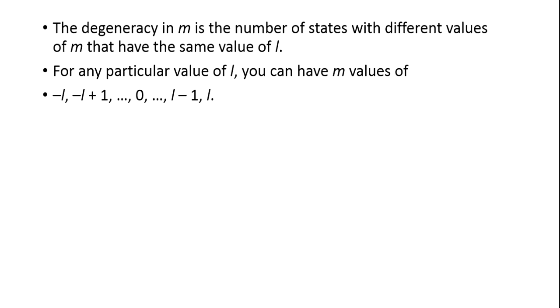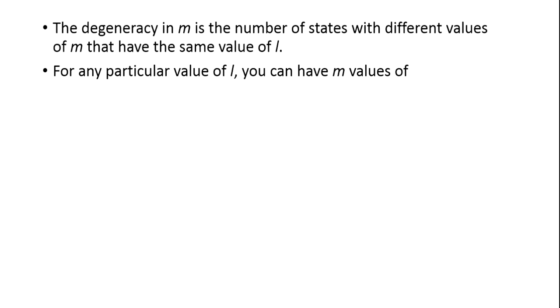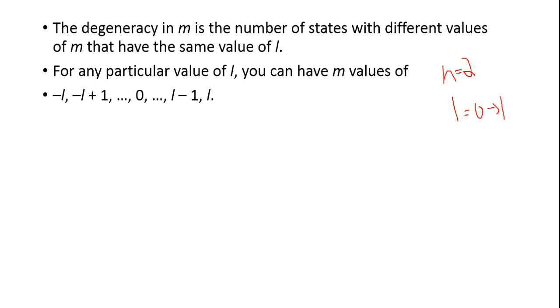This can be shown by an example. For n equal to 2, L can have values from 0 to n minus 1, that is 0 to 1. For L equal to 1, m can have values minus 1, 0, and plus 1.